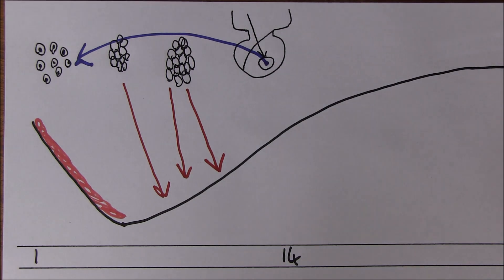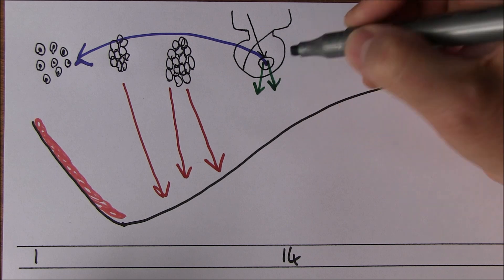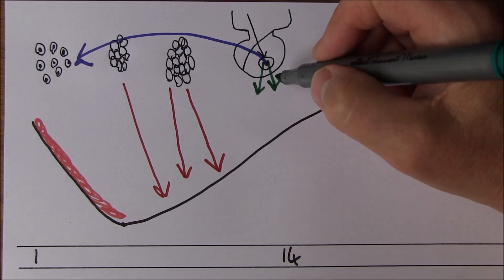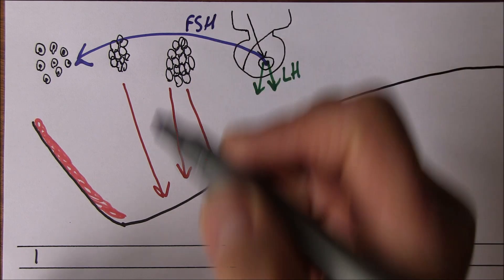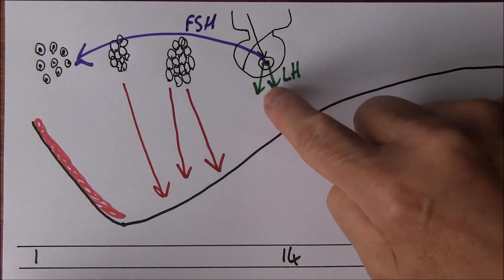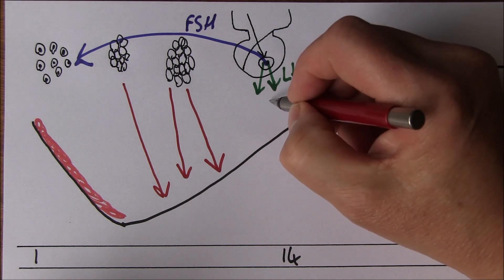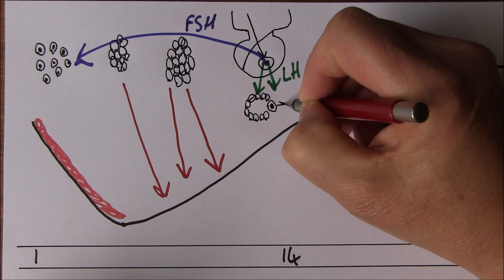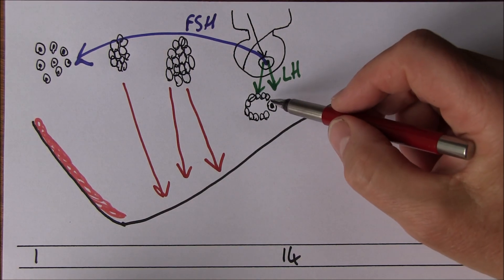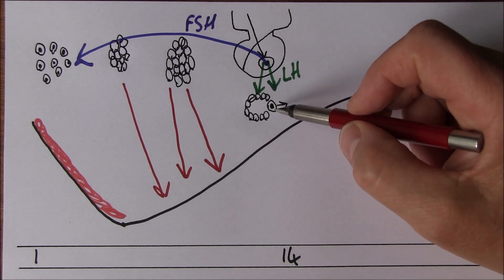At day 14, there's a spike in the other gonadotrophic hormone — the luteinizing hormone. Around about day 14 we get a spike in the production of luteinizing hormone, and what it does is cause ovulation. The granulosa cells are still going to be there, but the ovum is released and can potentially be fertilised. It's the spike in luteinizing hormone that actually triggers the process of ovulation.